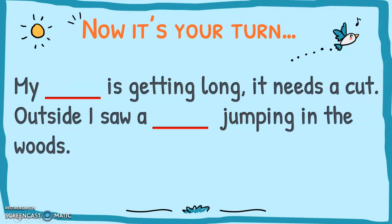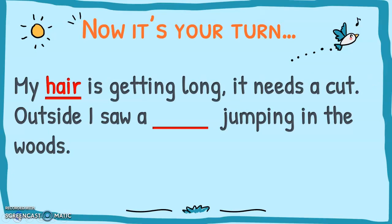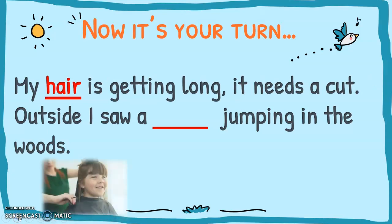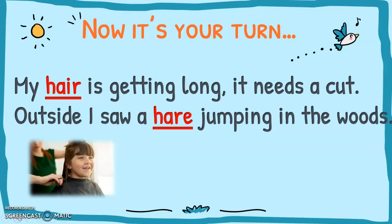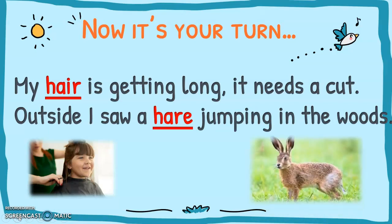Let's have a look at another one. 'My blank is getting long. It needs a cut. Outside, I saw a blank jumping in the woods.' The first is hair — the hair on our head, H-A-I-R. 'My hair is getting long. It needs a cut.' But the animal is hare, H-A-R-E. 'Outside, I saw a hare jumping in the woods.'